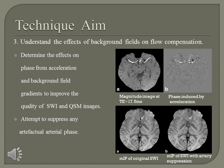Our goal is to understand the effects of background fields on flow compensation and to suppress the artificial fields associated with arteries. The first row shows images at echo time of 70.5 ms, where you can find the phase induced by acceleration. The second row shows mIP SWI images with and without artery suppression. Comparing these two images, you can find that without suppression of the arteries' phase, false enhancement of the arteries can be seen in the original SWI images.